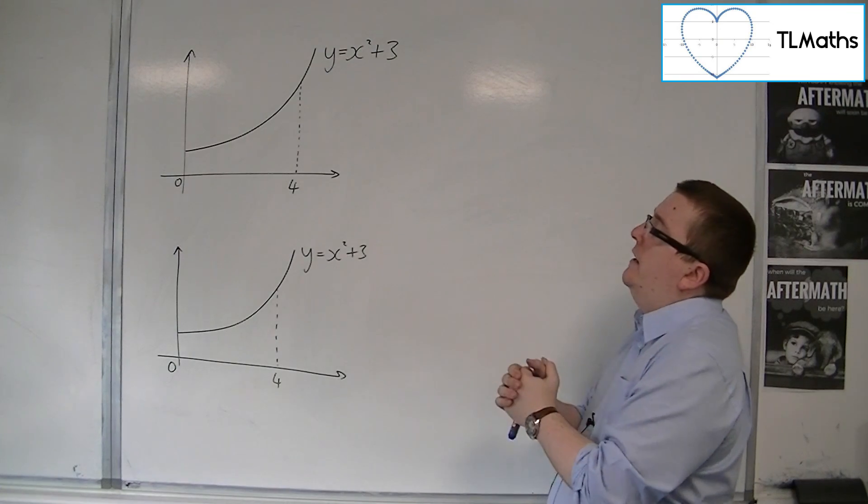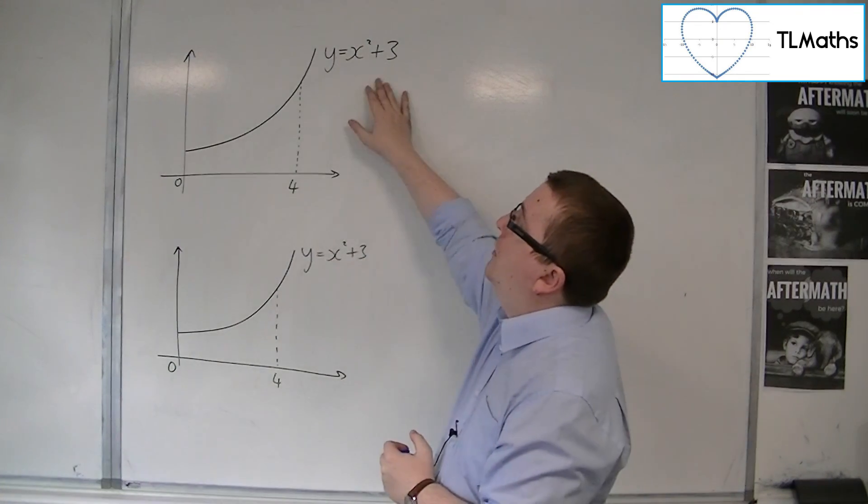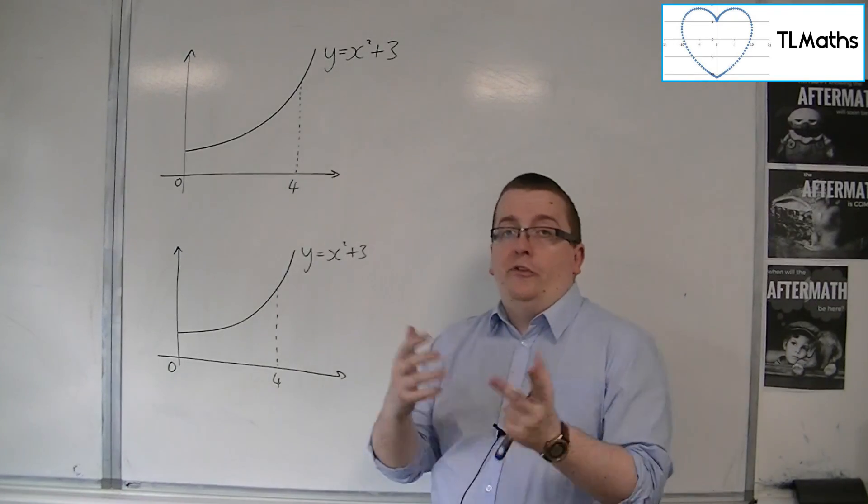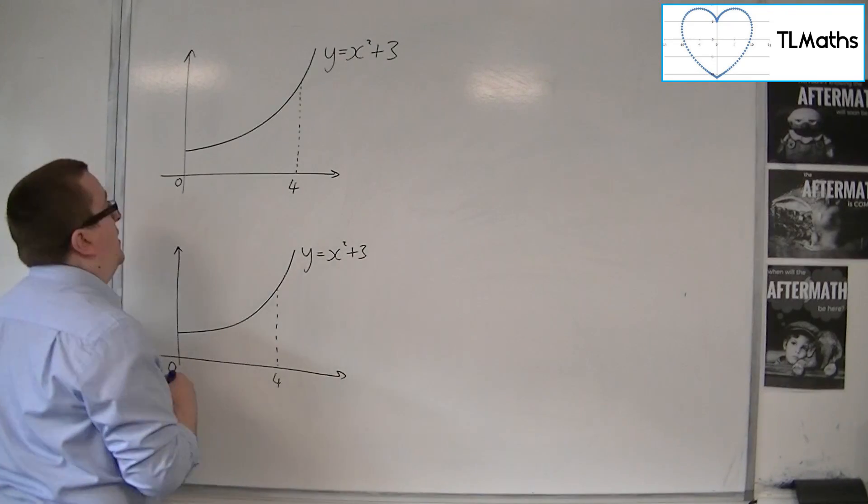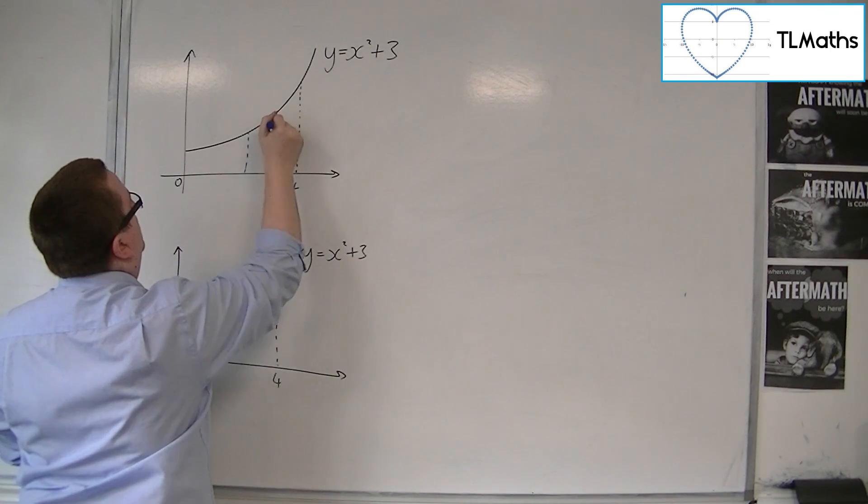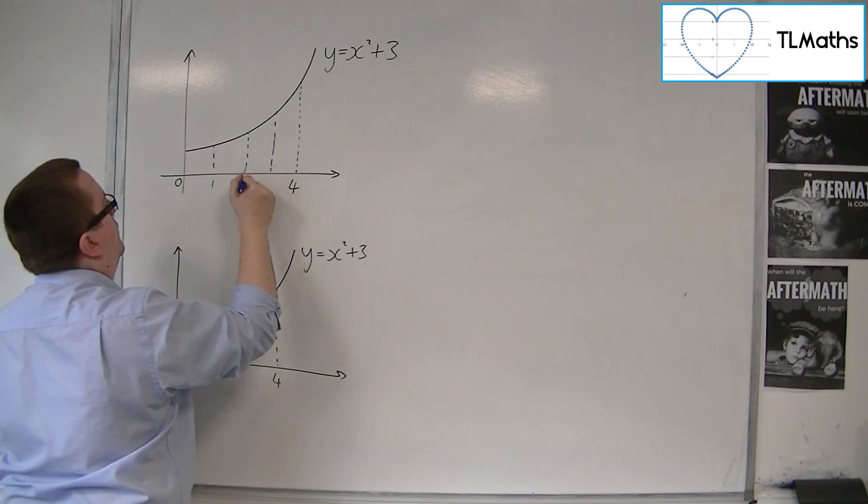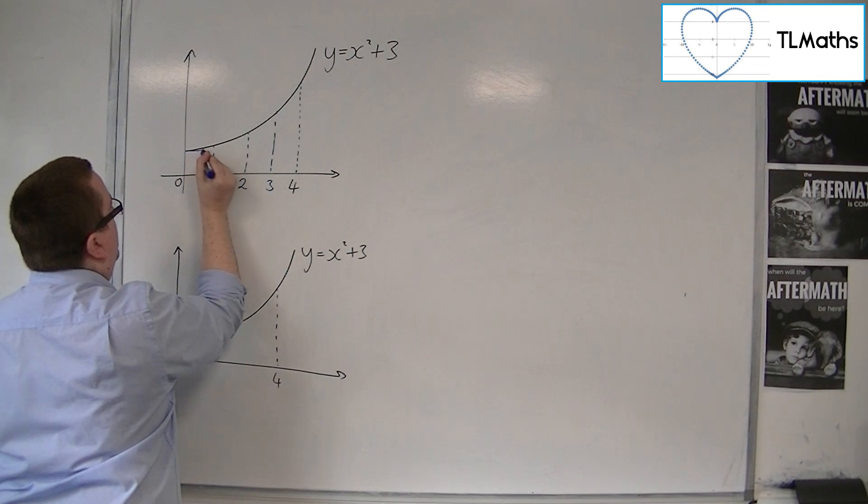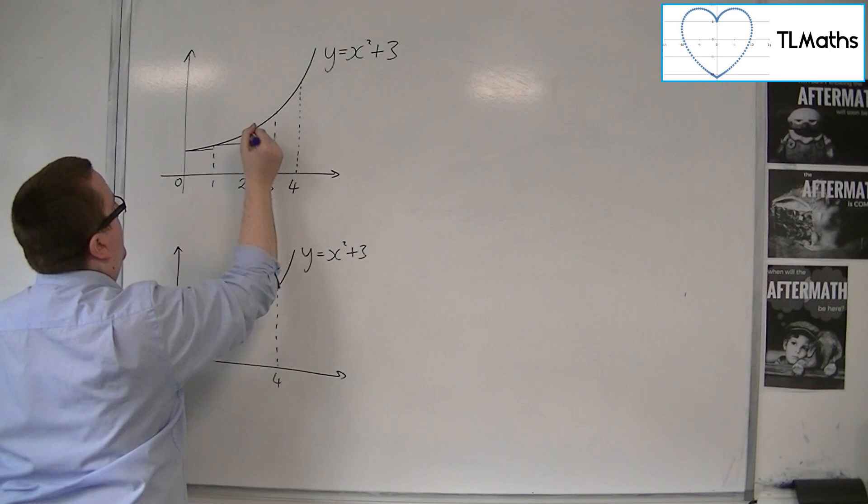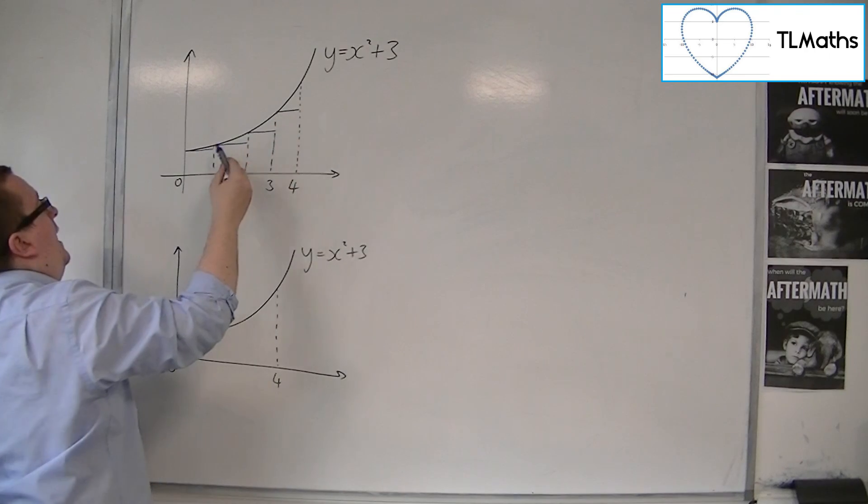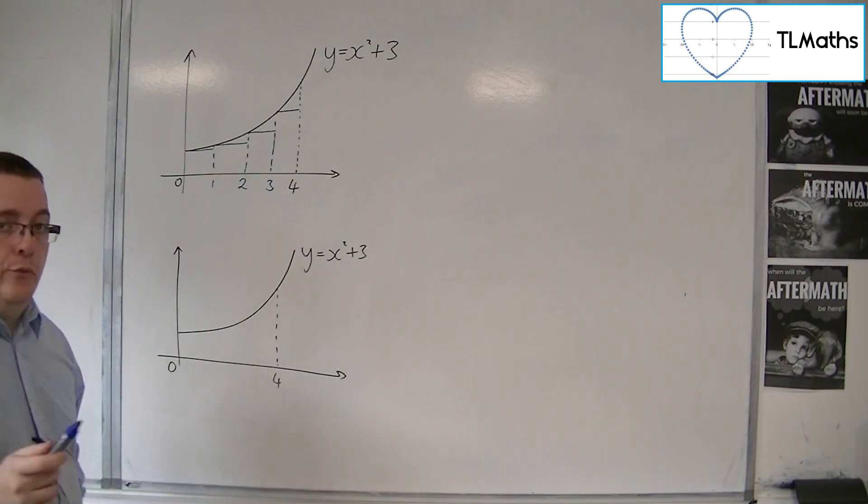So let's say I want to estimate the area underneath the curve y equals x squared plus 3 between 0 and 4 using a series of rectangles. There's a couple of ways that you could do this. You could split it up into 0, 1, 2, and 3. And then what you could do is look at the area of that rectangle there, and then that one there, and then that one there, and then that one there. I could find the area of each of those rectangles.